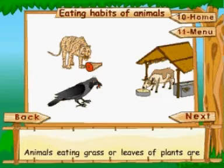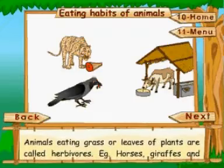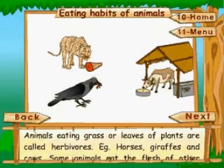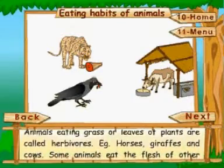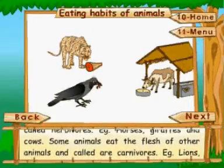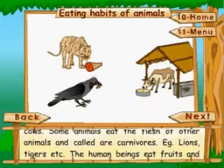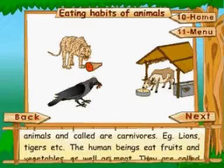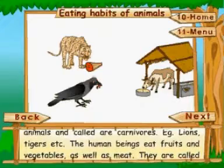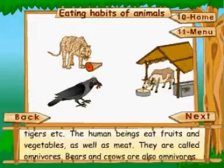Eating habits of animals: animals eating grass or leaves of plants are called herbivores. Examples include horses, giraffes, and cows. Some animals eat the flesh of other animals and are called carnivores. Examples include lions and tigers.